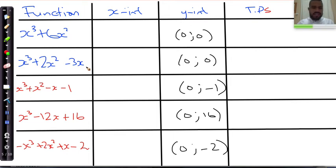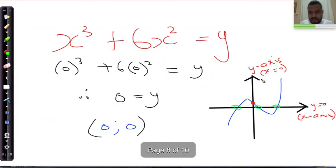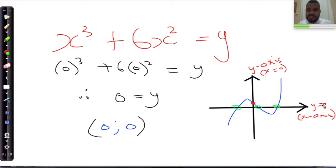We're going to look at finding the x-intercepts of the cubic function. It follows the same process as any other algebraic function. If we want to find the x-intercepts, we simply make the y-value equal to 0. These are the ones that occur on the x-axis, and the x-axis corresponds to the line y equals 0.